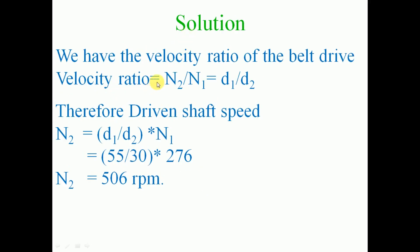For the solution, we have the velocity ratio of the belt drive. The velocity ratio is given by: driven pulley speed to driving pulley speed equals driving pulley diameter to driven pulley diameter. That is N2 by N1 is equal to D1 by D2. Therefore, N2 is equal to D1 by D2 into N1, which is 55 by 30 into 276. Therefore, N2 is equal to 506 RPM, which is the driven pulley speed.